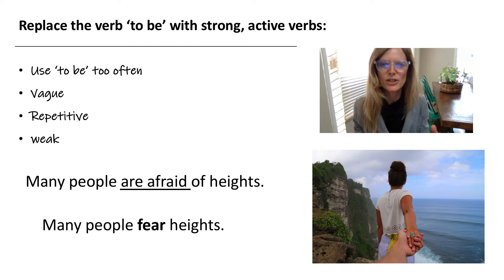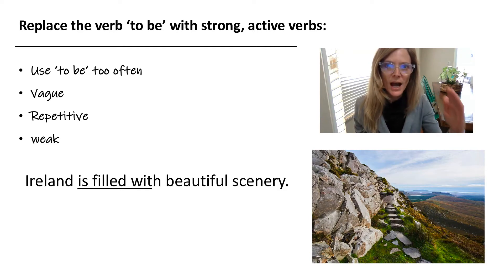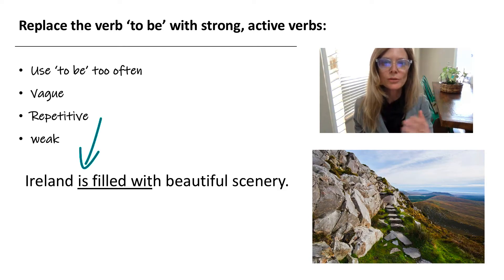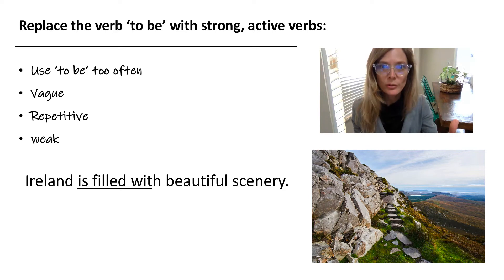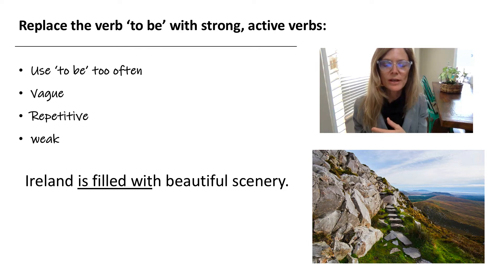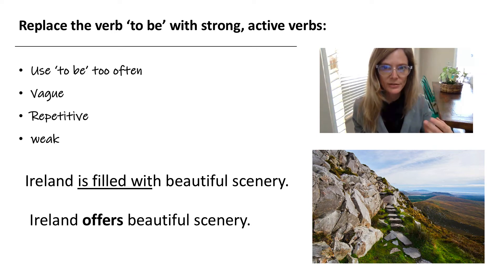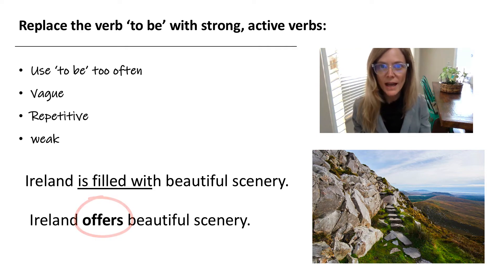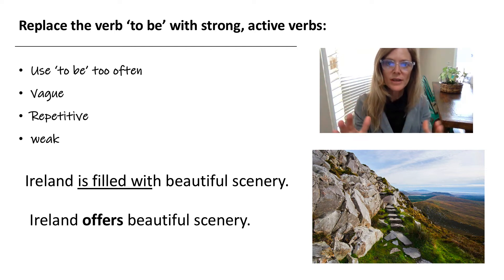Let's take a look at another pretty simple example so we can understand this concept. 'Ireland is filled with beautiful scenery.' Great sentence, but again it's not as strong as it could be if we took out that verb 'to be.' So that expression 'is filled with' — let's see if we can make that stronger. What about: 'Ireland offers beautiful scenery.' It's a stronger, more active verb. Don't you notice how the first sentence is a little bit longer than the sentence where we put in the stronger active verb?